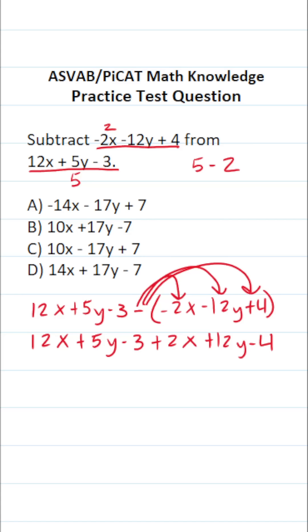Like terms have the same letter variables raised to the same power. 12x and 2x are like terms. 12x plus 2x is going to be 14x. Let's cross them out now that we've combined them.